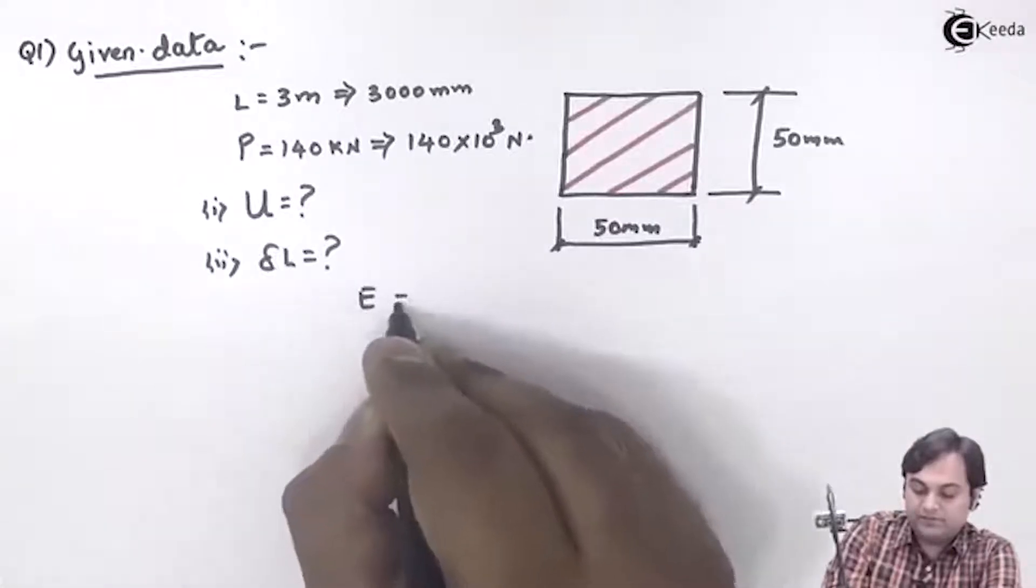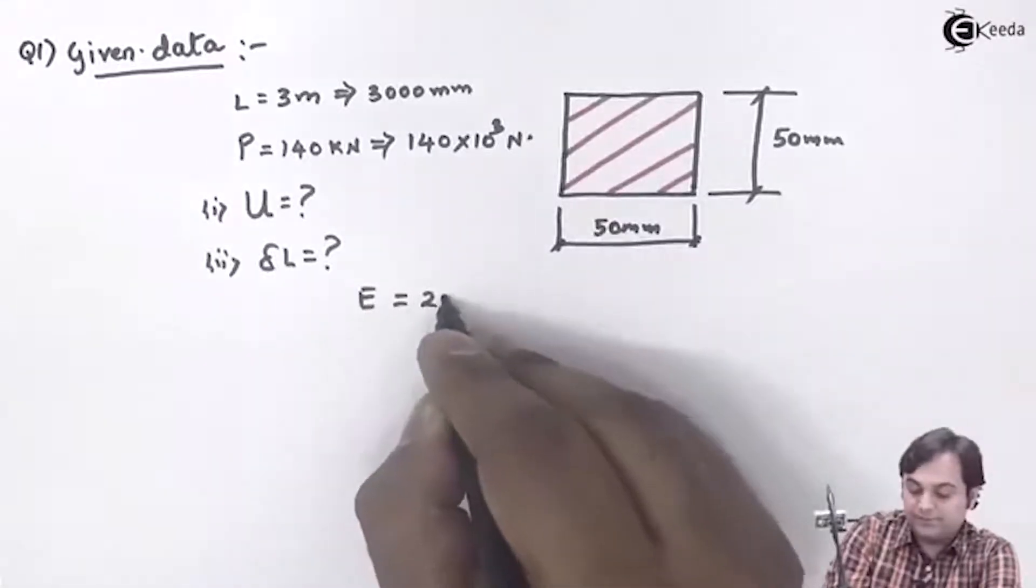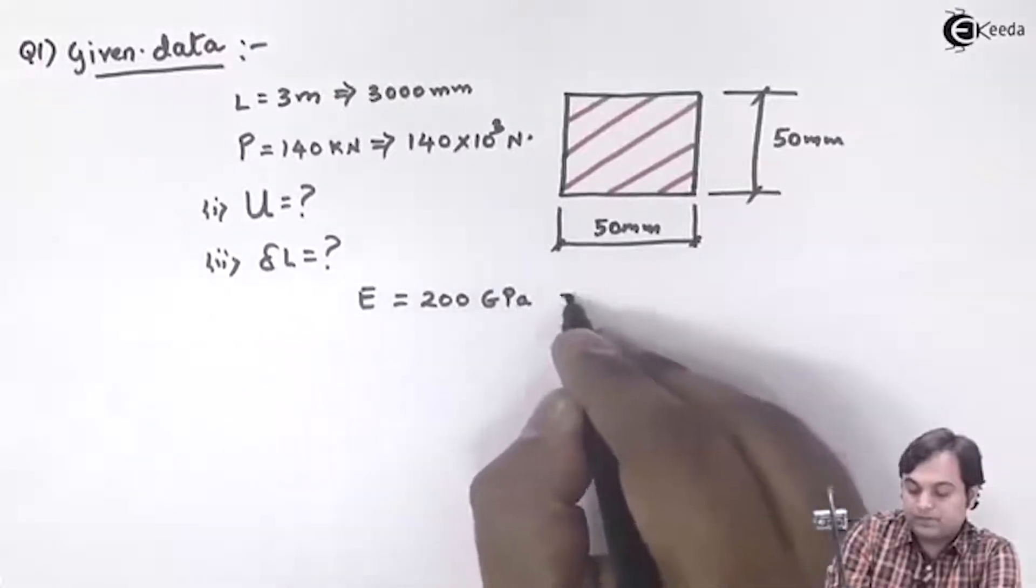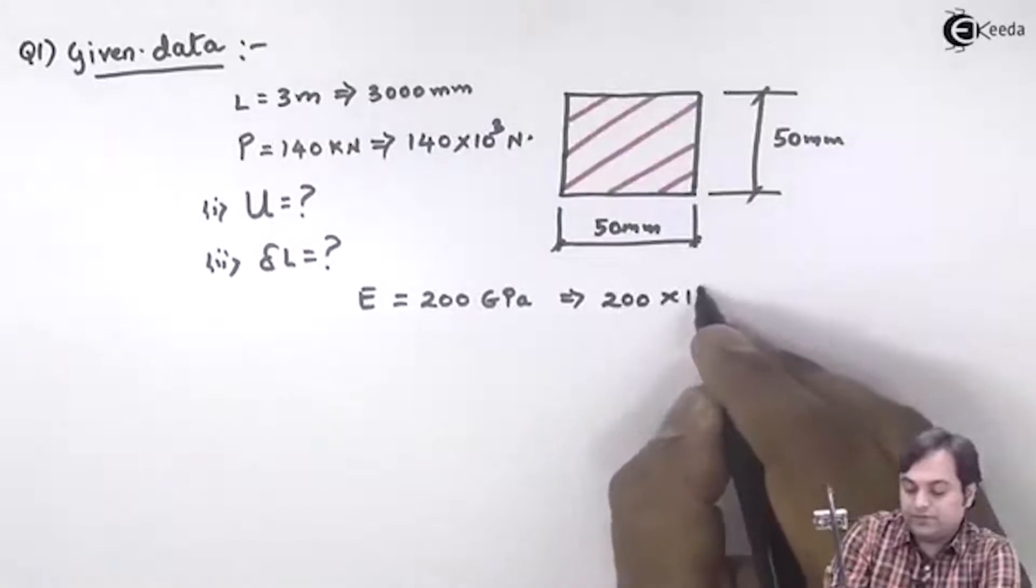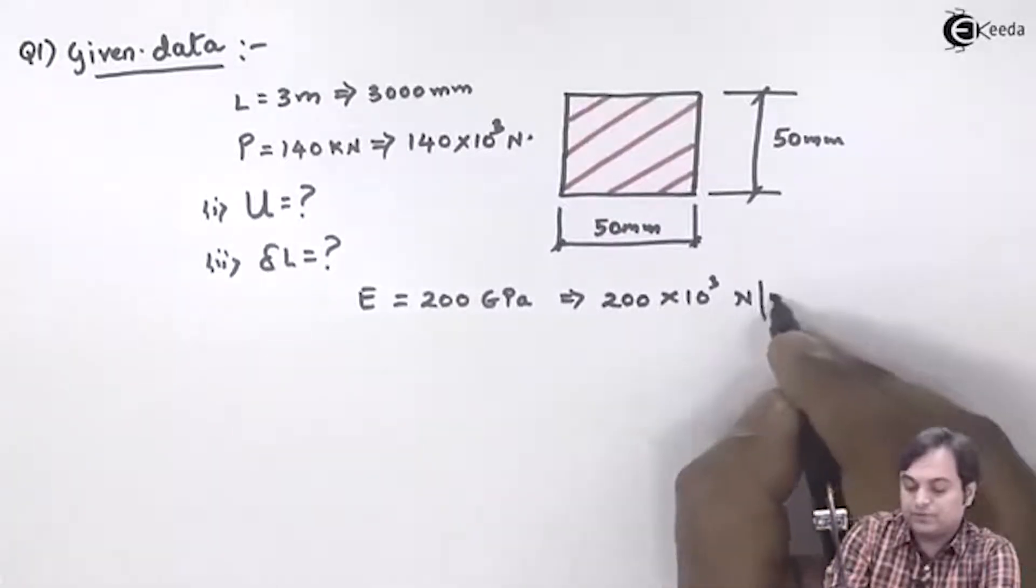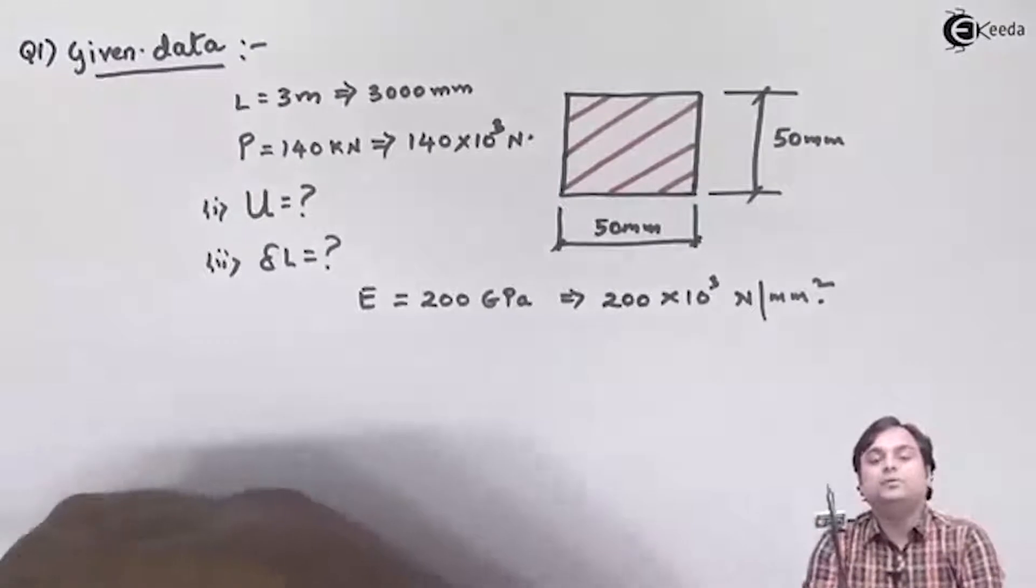Capital E value is given as 200 GPa, and that is 200 × 10³ N/mm². Now as we see in this problem,